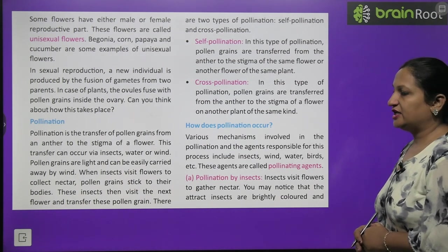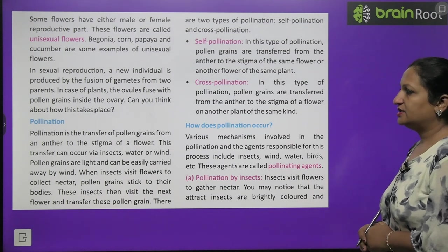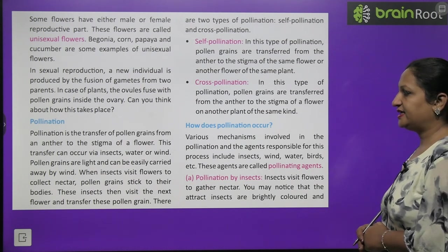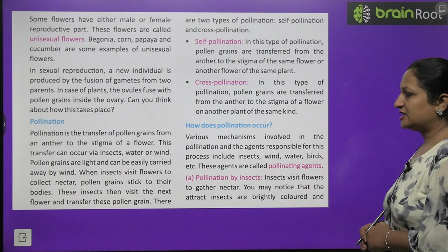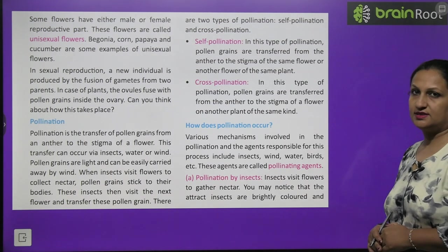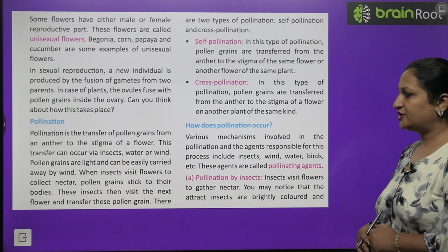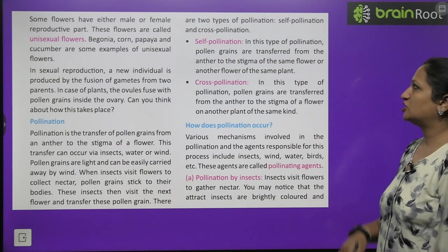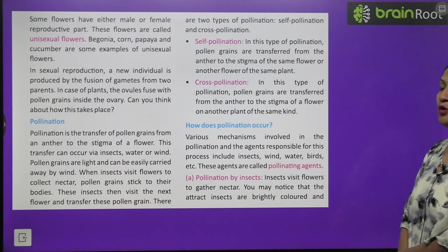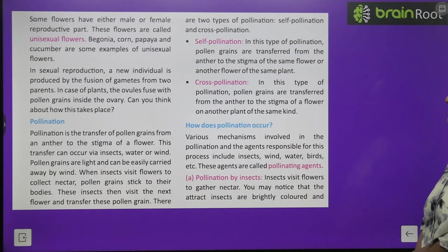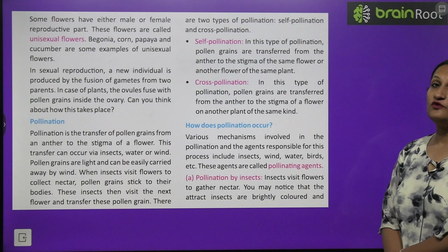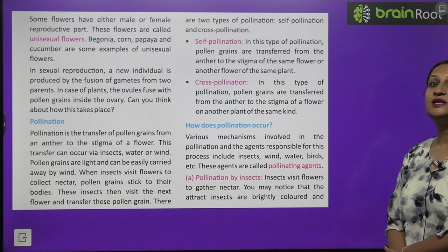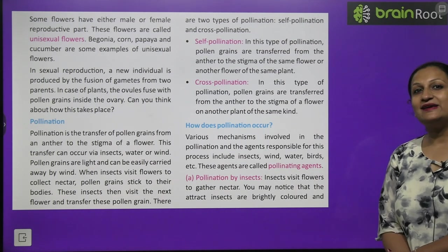Pollination is the transfer of pollen grains from anthers to the stigma of a flower. This transfer can occur through insects, water or wind. Pollen grains are light and can be easily carried away by wind. When insects visit flowers to collect nectar, pollen grains stick to their bodies. These insects then visit next flower and transfer the pollen grains there. So pollination is of two types: self pollination and cross pollination. In this type of pollination, pollen grains are transferred from anthers to the stigma of same flower or another flower of same plant. But in cross pollination, pollen grains transfer to the stigma of some other flower but of the same species.